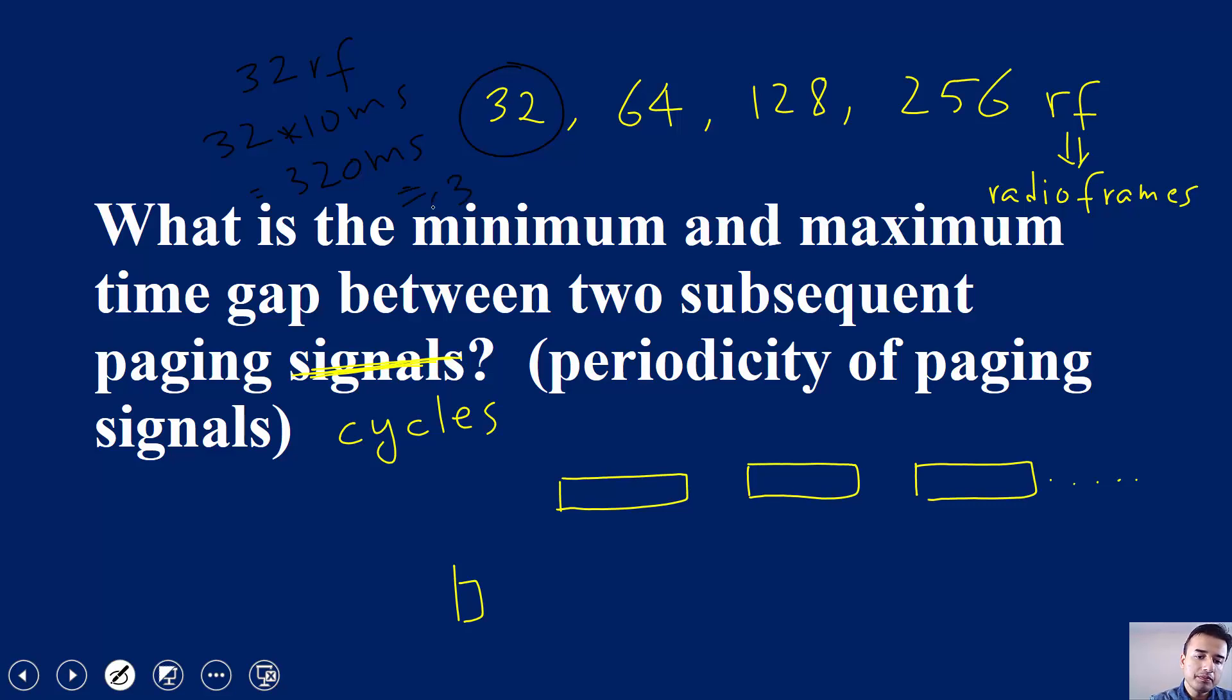So for example, if this paging cycle is specified equals to 32 radio frames, then this user - let's call this user as Adam - and if Adam's UE will wake up at...